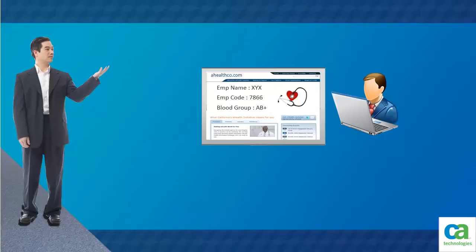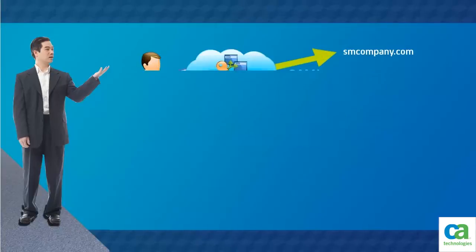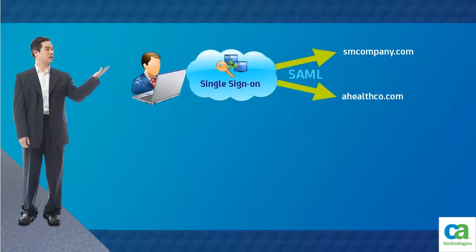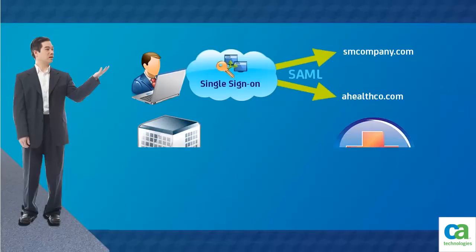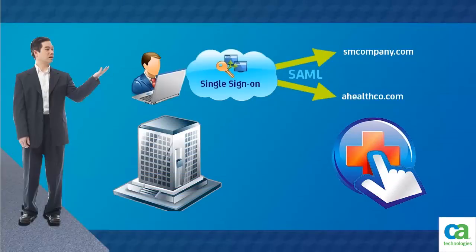The employee is taken to the ahealthco.com website and is presented with the correct health benefit information without having to sign on to the ahealthco.com website. This single sign-on between organizations works because SAML-based federation is deployed between smcompany.com and ahealthco.com.